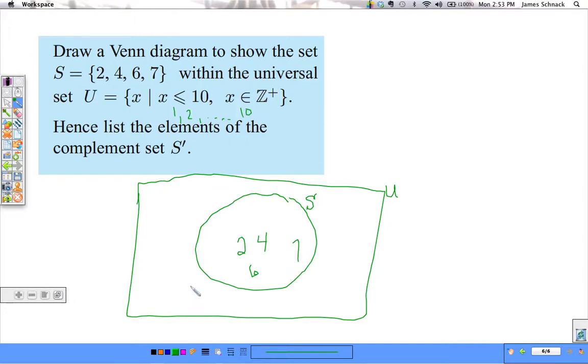What still isn't in S that should be in U? You need 1, 3, 5, 8, 9, and 10. So, it doesn't matter where you put these. They're just floating around in the space. So, the complement of S, S prime, that's going to equal 1, 3, 5, 8, 9, 10.